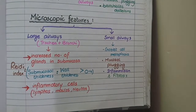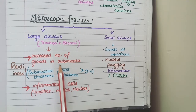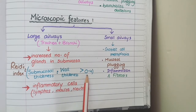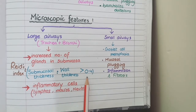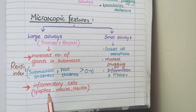In large airways — trachea and bronchi — you see an increase in the number of glands in the submucosal area, which increases the thickness of the submucosa. As a result, the ratio of submucosal thickness to total wall thickness is increased from the normal value of 0.4. This ratio is known as Reid's index, and in chronic bronchitis Reid's index becomes greater than 0.4. Additionally, since bronchitis contains the suffix -itis, you see inflammatory cells in large airways.